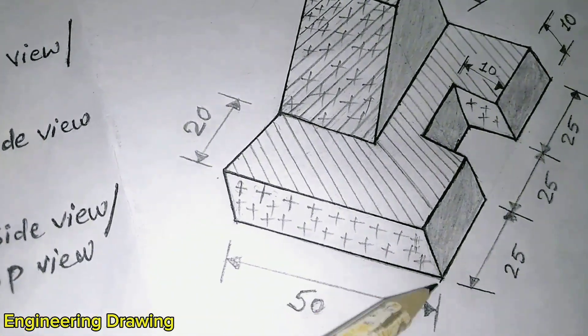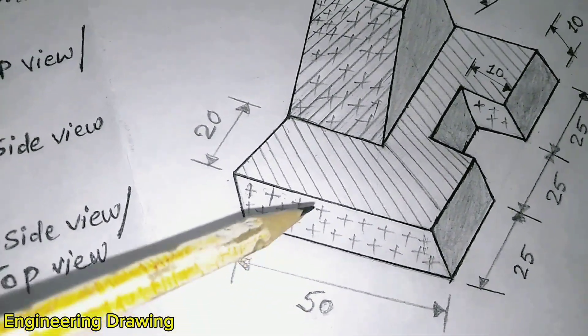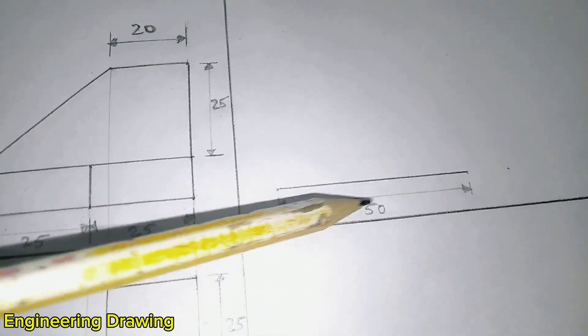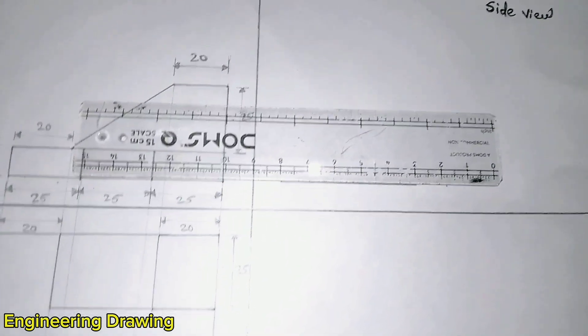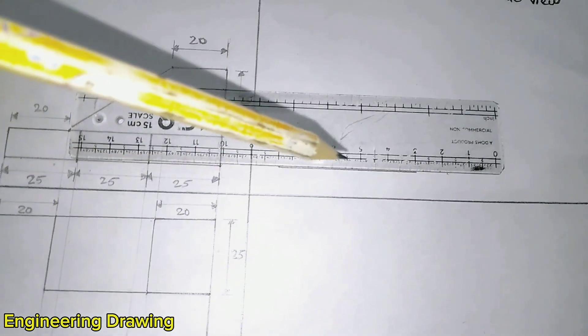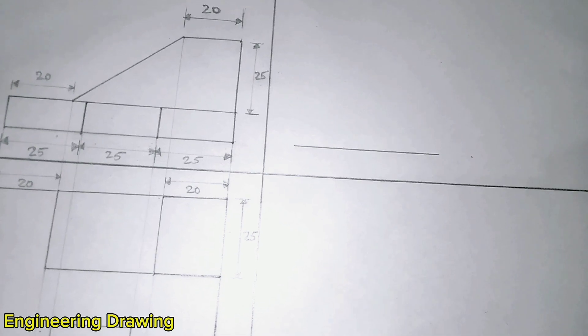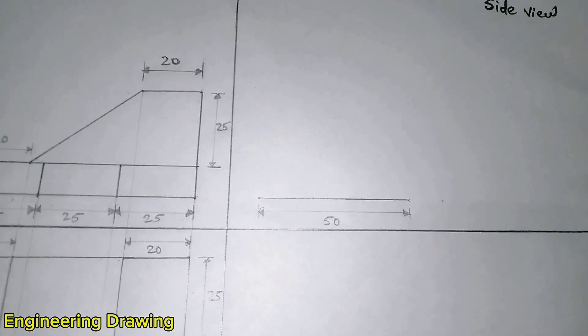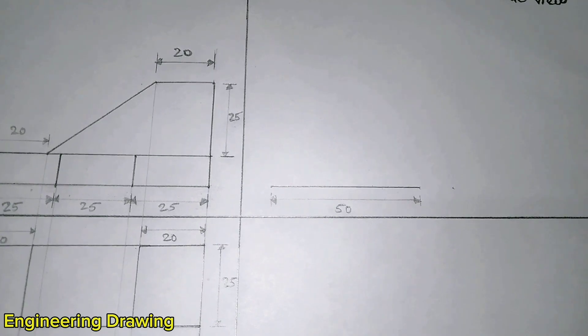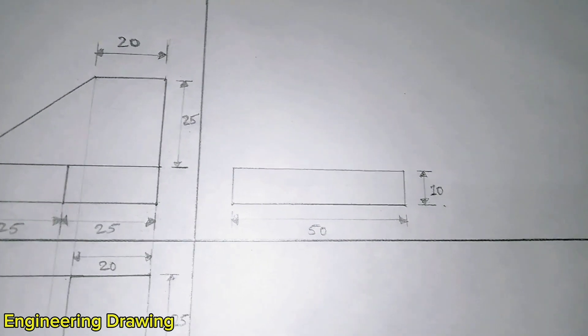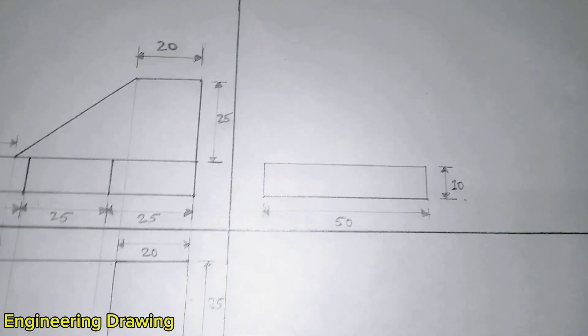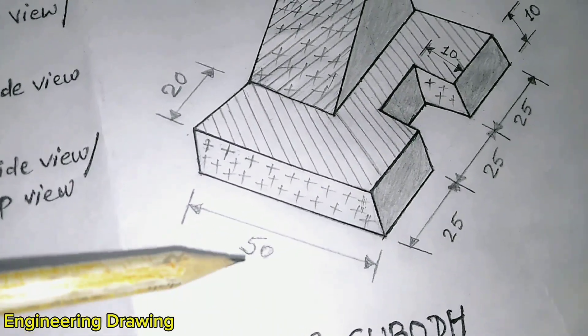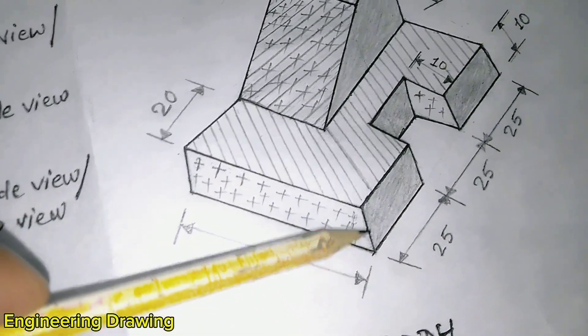The base of side view is equal to top view height, ok friends? That's why the base of side view will be 50 mm. The height of this base is 10 mm, which is shown in this figure.